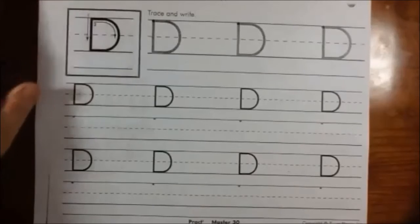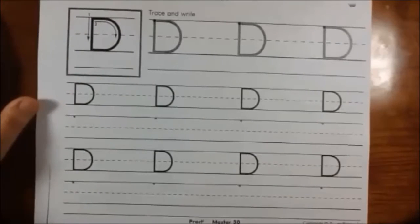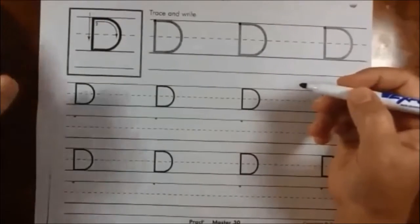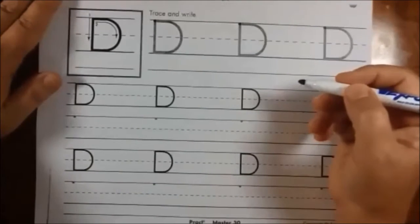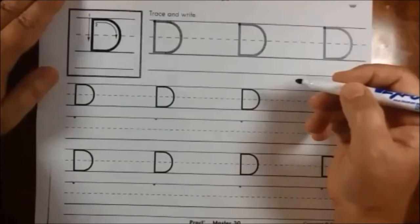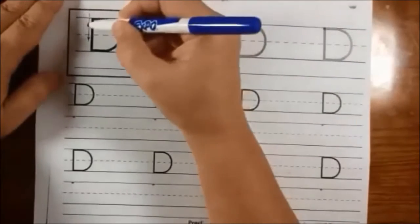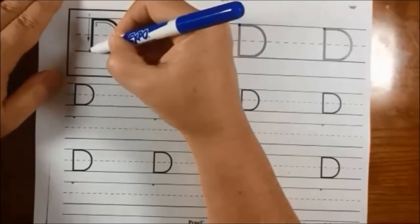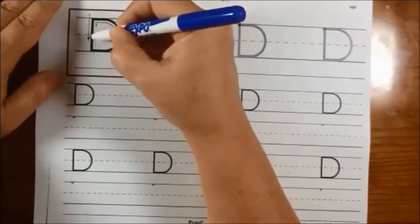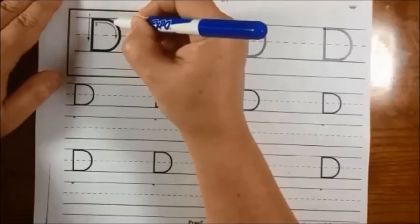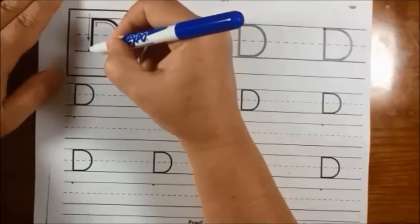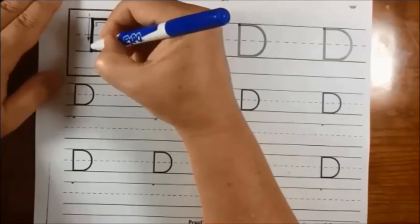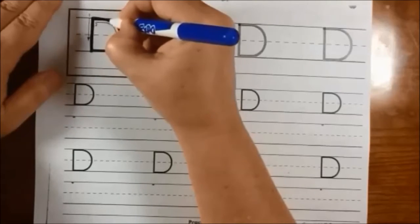Let's learn how to make the uppercase D. Remember to hold your pencil correctly and use your helper hand to hold your paper if you need to. The uppercase D, once again, starts at the top line. We're going to make a line down. We're going to go back up and then around. So it looks like this. Down. Up. And around.